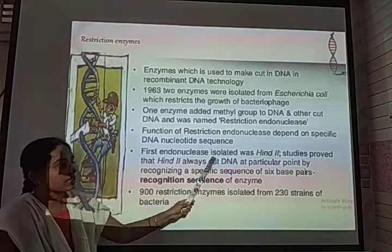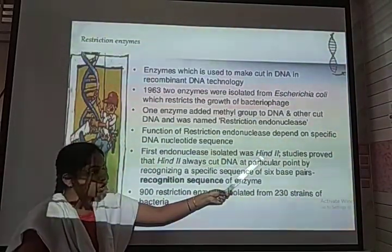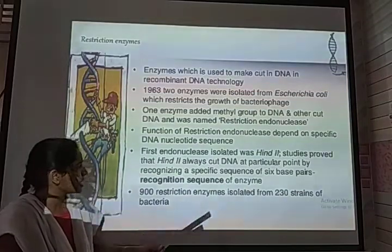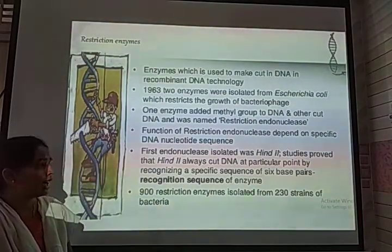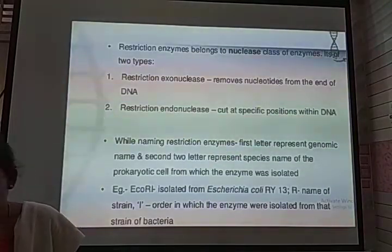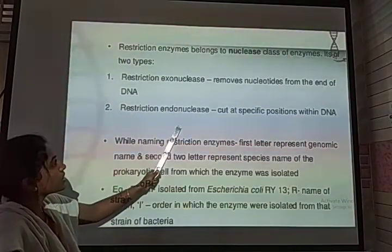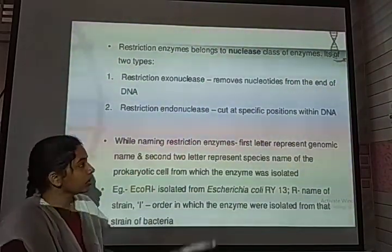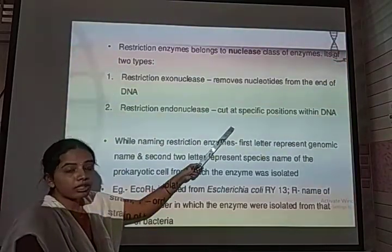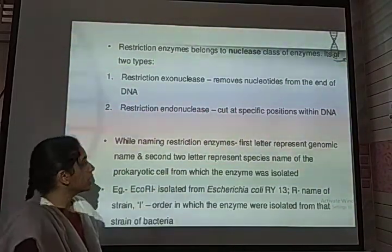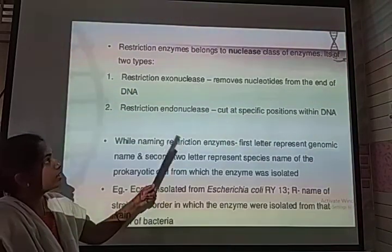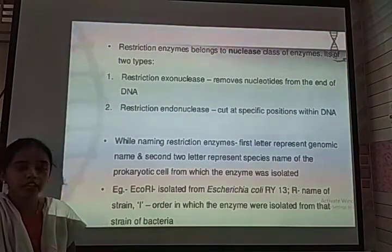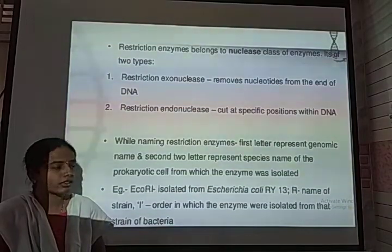The first endonuclease isolated in this technology is called HindII. It is helpful for recognizing a specific sequence of six base pairs, called the recognition sequence of the enzyme. Restriction enzymes are classified into exonucleases and endonucleases. Exonucleases remove nucleotides from the terminal or end region. Endonucleases cleave the double-stranded DNA at a specific location within the DNA. Commonly used restriction endonucleases in genetic action include EcoRI, BamHI, SalI, HindII, and others.